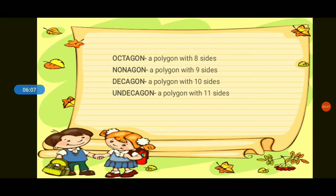We start with a polygon with three sides — triangle. A polygon with four sides — quadrilateral. A polygon with five sides — pentagon. A polygon with six sides — hexagon. A polygon with seven sides — heptagon. A polygon with eight sides — octagon. A polygon with nine sides — nonagon. A polygon with ten sides — decagon. A polygon with eleven sides — andecagon.